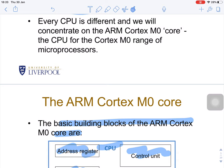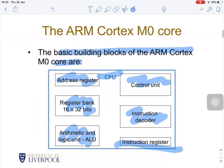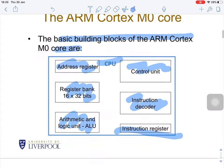The ARM Cortex-M0 core is the CPU for the Cortex-M0 range of microprocessors. The basic building blocks of the ARM Cortex-M0 are: the address register, the control unit, the register bank (16 × 32 bits), the instruction decoder, the arithmetic logic unit (ALU), and the instruction register.